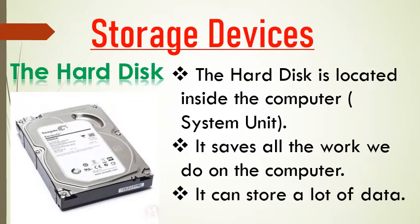The first one is the hard disk. The hard disk is located inside the computer, that is the system unit. It saves all the work we do on the computer. It can store a lot of data. Yeh computer system ke andar located hota hai aur hamare sabhi kaam ko save karta hai jo hum log computer pe karte hai.